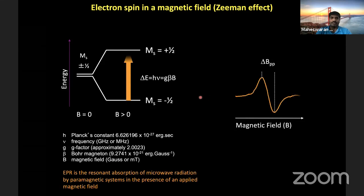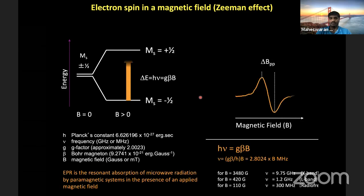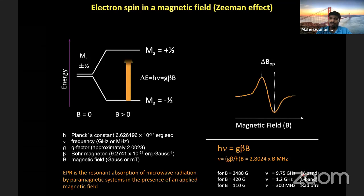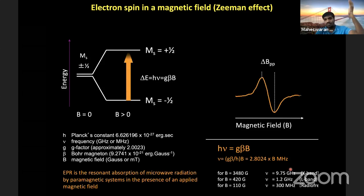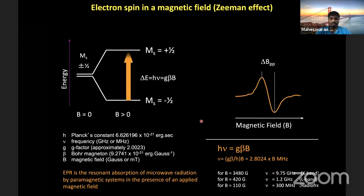Like NMR, EPR is also classified in terms of frequency, but this frequency is called a band. For example, if the frequency of the instrument is around 9.7 to 9.9 gigahertz, it is called an X-band instrument. We can also have L-band, Q-band, and W-band — similar to NMR systems at 400 MHz, 500 MHz, or 750 MHz. The only difference is the frequency of the instrument, which varies across instruments. Under the resonance condition, the equation is hν = GβB, where h is Planck's constant, ν is the instrument frequency, β is the Bohr magneton, B is the field at which absorption occurs, and G is the most important parameter we want to determine.